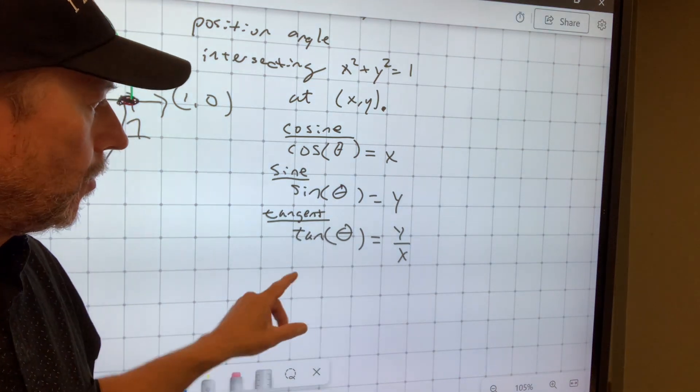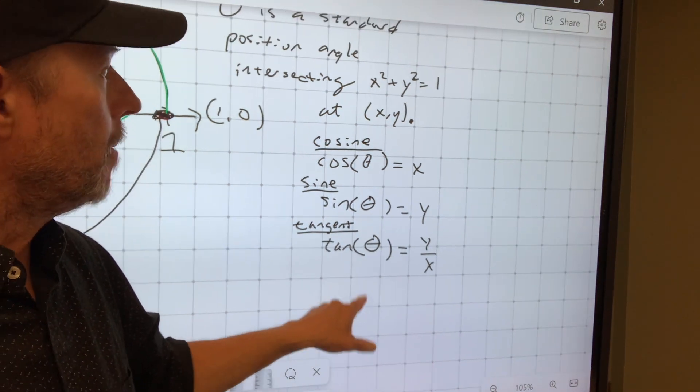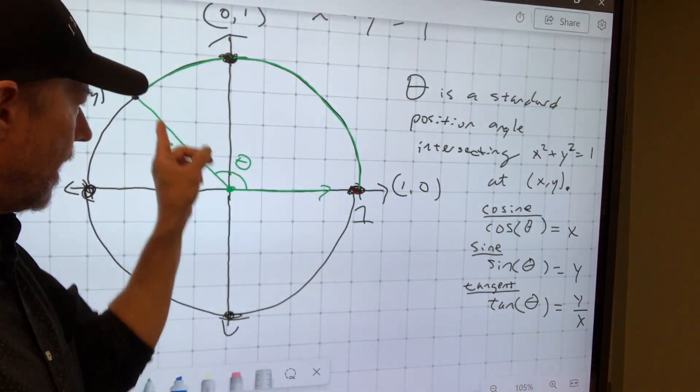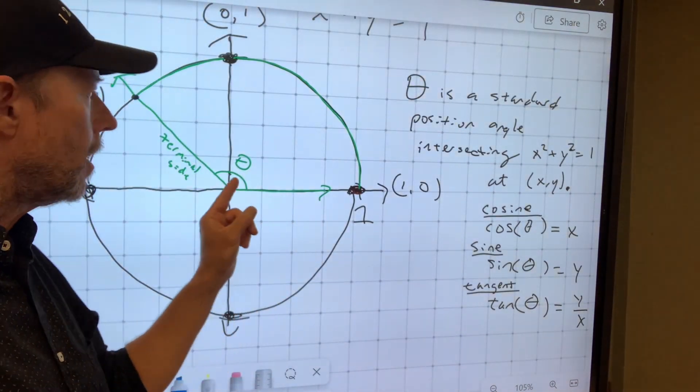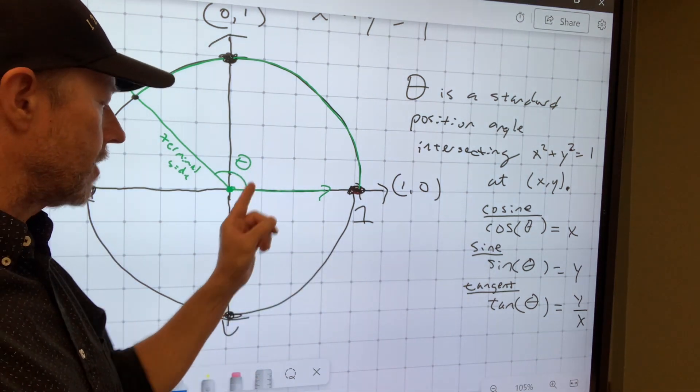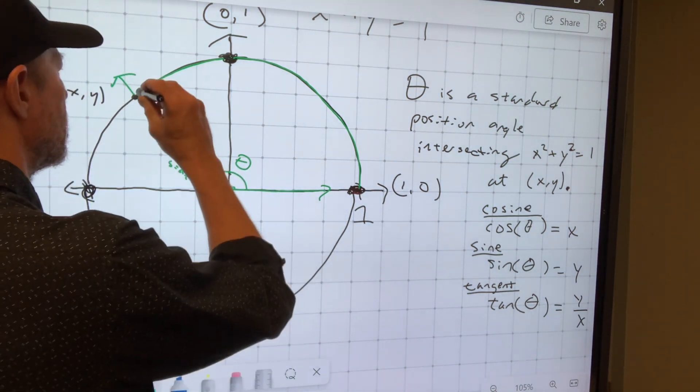So we can do one example or two. But before we go, I want to point out that theta not only is this angle measurement, which can be in degrees or in radians, but if you're in radians, that means theta is also this arc length.